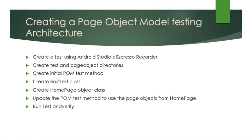That completes part two of our Android Espresso series. Today we created a test using Android Studio Espresso's recorder, created test and page object directories, created an initial POM test method, then created a base test class, then created a Homepage object class that extends the base test class, and finally updated the POM test method to use the page objects we created within the Homepage.